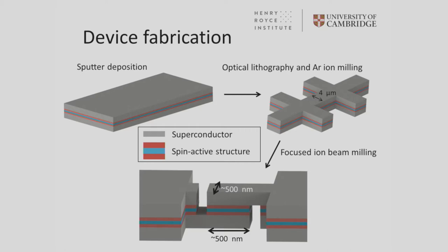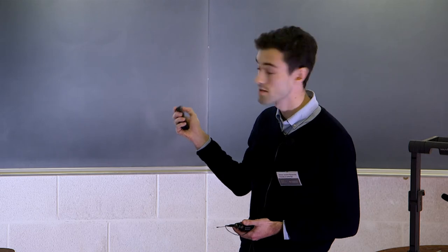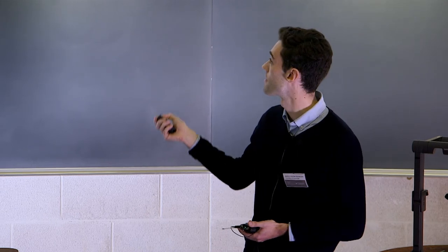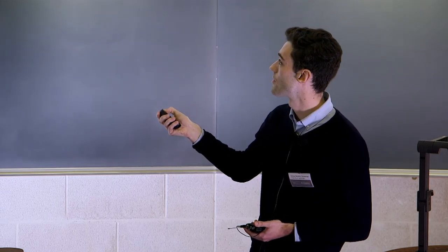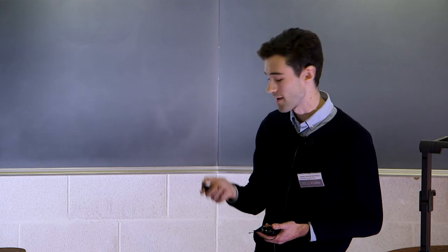Then I transfer this into the dual beam system, which I'll show on the next slide, and I cut out two slots to define my final device geometry, where the current path needs to pass from one superconductor through to the other through this spin active stack. That's what I do my electrical measurements on. The advantage of this technique is that we don't need to break vacuum at any of the intermediate interfaces.